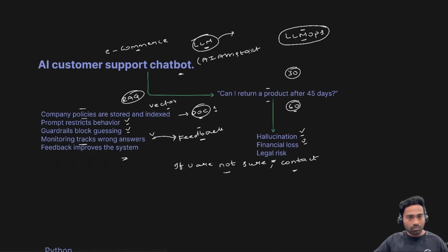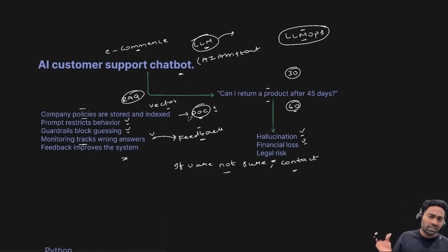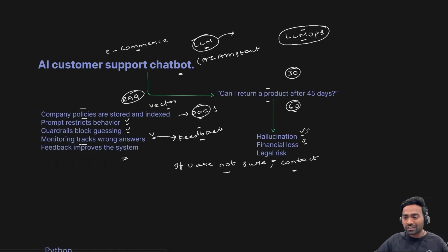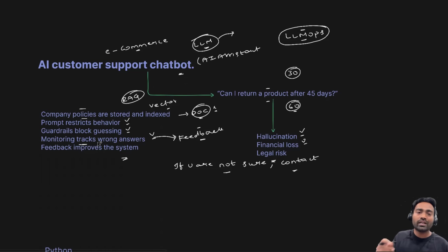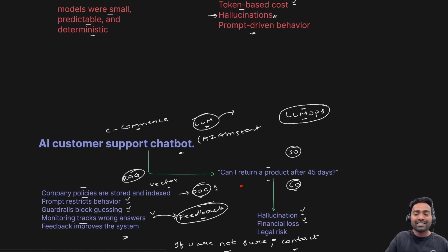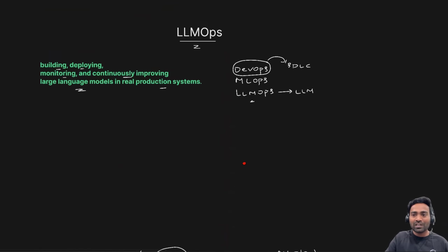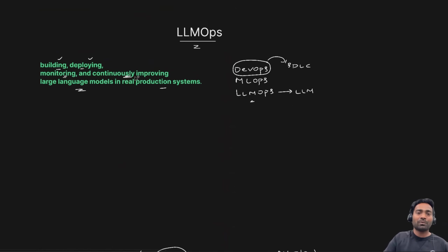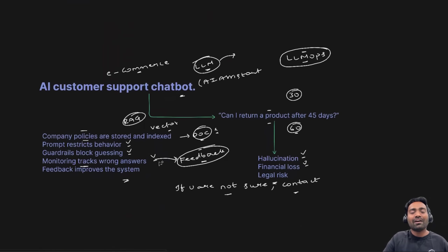So step one is to take a large language model. Provide it with company policies — maybe using RAG or maybe fine-tuning it on the document. Provide prompts to restrict behavior and reduce hallucination. Implement guardrails to stop anything against the company's policies. Monitor the behavior, introduce the feedback loop, and improve the performance of the large language model. That's why in the first statement you learned LLMOps is: building, deploying, monitoring, and continuously improving the performance of the large language model in the production system.